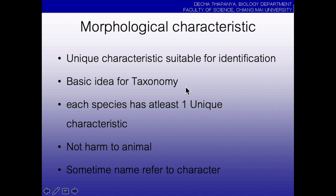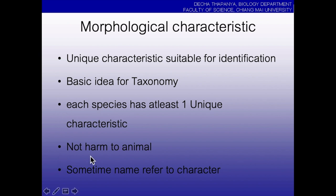Morphology is the basic idea for taxonomy and for keys. Each species contains at least characters that are special for each species. Also, morphological identification does not harm animals — sometimes you just only use binoculars to look at and identify. There is no need to touch it.